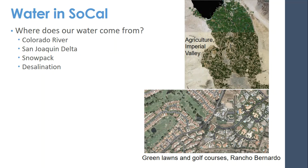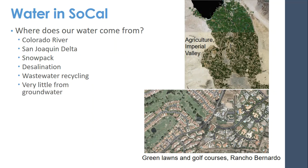We have a desalination plant up and operating. Desalination is a very expensive way to make water. It's also pretty fossil fuel intensive and has questionable environmental impacts. We also do some wastewater recycling, which is kind of that toilet-to-tap idea — though that's not a very nice way to put it. You've probably seen signs on campus and other places that say 'not potable — reclaimed water being used for irrigation.' That is water being recycled to be reused in the same location. We do use some groundwater, but very little.